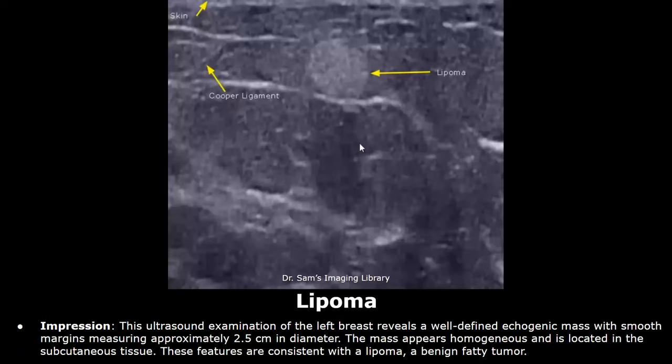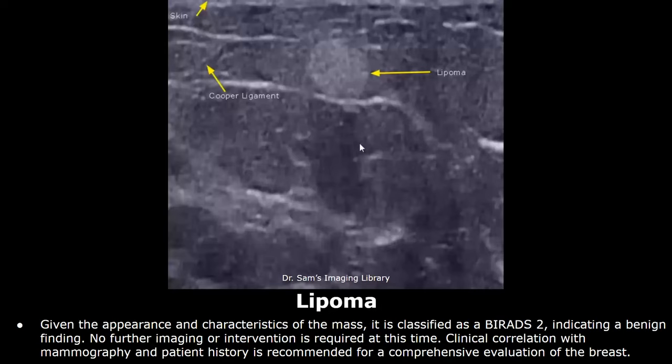In the impression, you can mention the well-defined echogenic mass with smooth margins and then write its size. After that, you can write about its homogeneity and its location in the subcutaneous tissue. These features are consistent with a lipoma. After that, you can write the BIRADS score and then end with a line about clinical correlation.